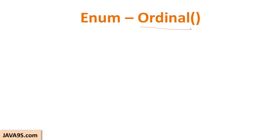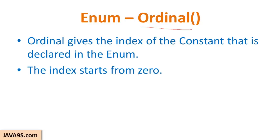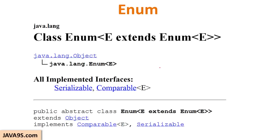The next method is ordinal(). Since the enum class can return constants as an array, you might want to get the index of a particular constant showing at what level it has been defined. The ordinal gives you the index of the constant starting from zero. Looking at the Java documentation, you can see that the Enum class is declared as an abstract class. This is a class — that is why it extends Object.